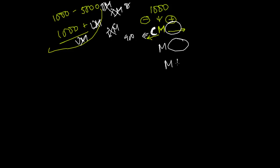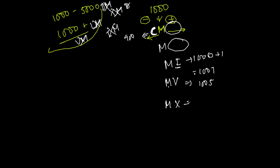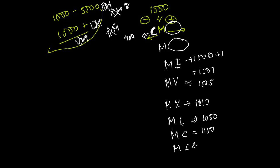After M you can put anything. MI means 1000 plus 1, which is 1001. MV means 1005. MX means 1010. ML means 1050. MC means 1100.